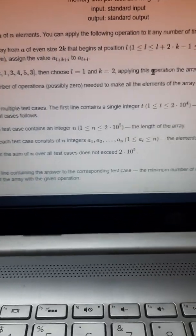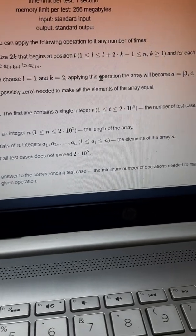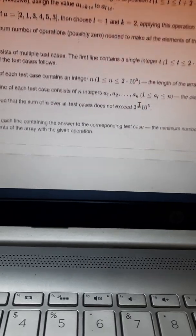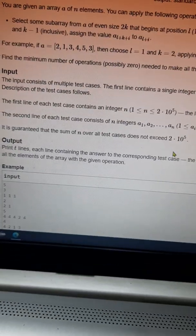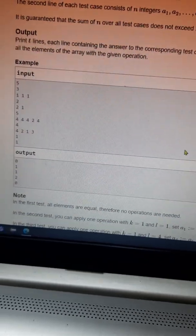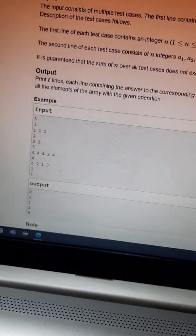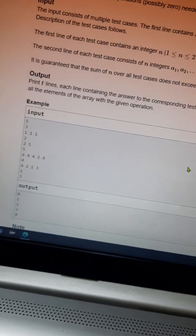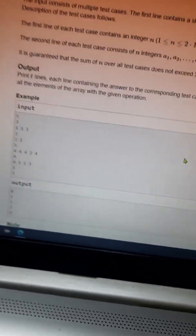You should find the minimum number of operations needed to make all the elements of the array equal. We should do this operation a number of times so that all elements of the array should be equal, and we need to print the minimum number of operations needed to make that possible.